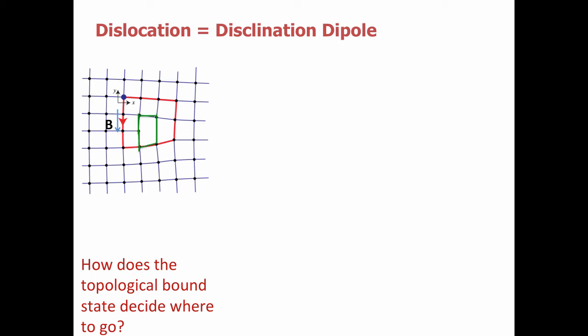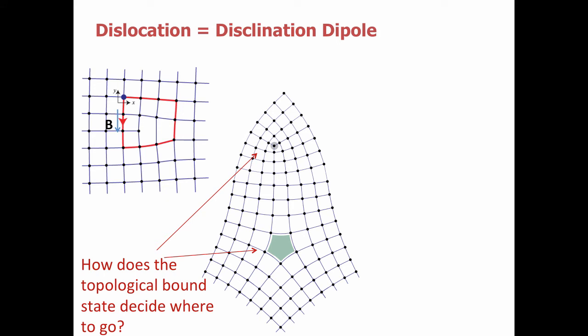If this dislocation sits in a weak topological phase which harbors a bound state, and we split the disclination apart into its two constituent pieces, we might ask, how does the topological bound state decide where to go? Does it still exist? Does it split? Does it fractionalize? Does it follow one or the other? I'll leave this as a question for an excited listener. But the idea is that the actual bound state will follow one of the two different disclinations in this case.